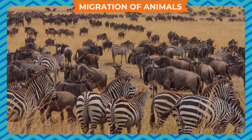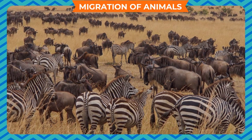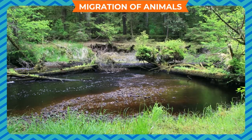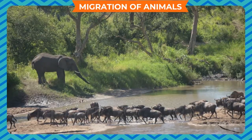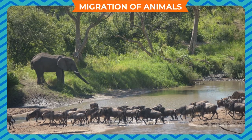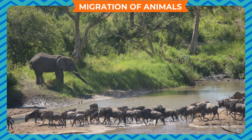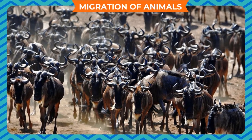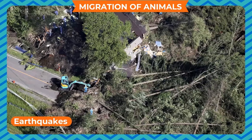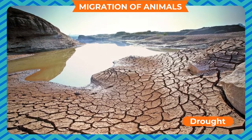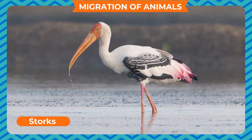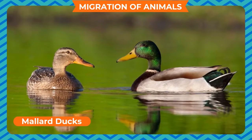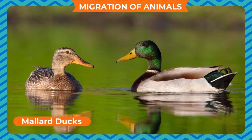Migration of animals: migration is defined as the seasonal movement of an animal population from one region to another. This usually occurs due to change in season, habitat, or unavailability of food which becomes adverse to survival. Some animal populations also migrate due to natural calamities like earthquakes, drought, or floods.